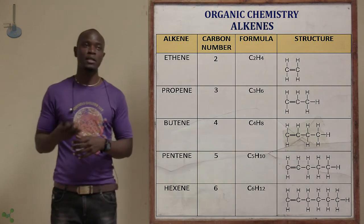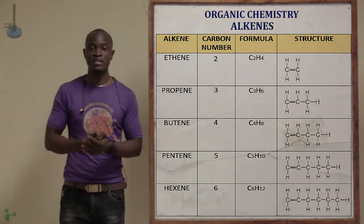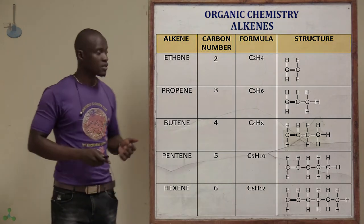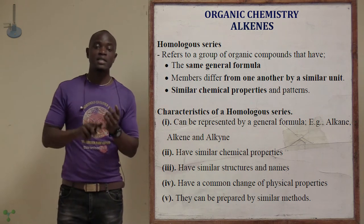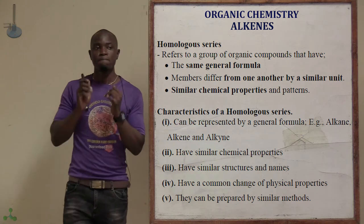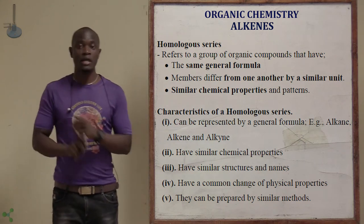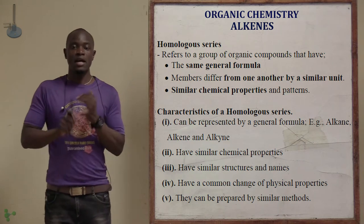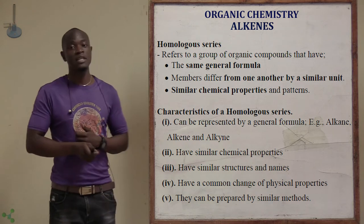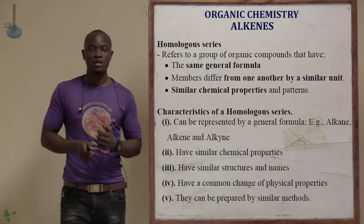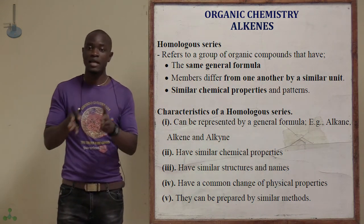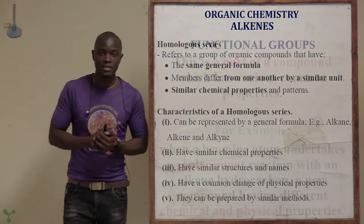The members differ from each other by a value of CH2, just as between propene and butene there is a difference of one carbon and two hydrogen atoms. They form a homologous series because they share the general formula CnH2n and members differ from one another by the unit CH2.